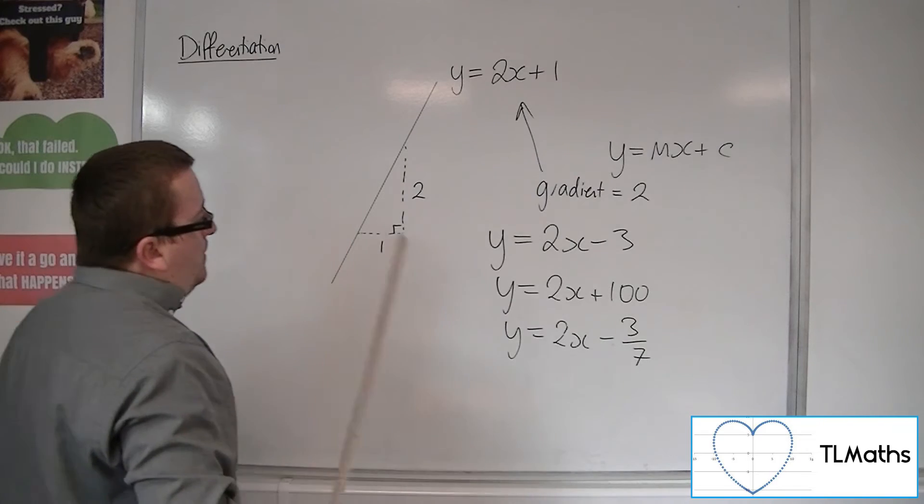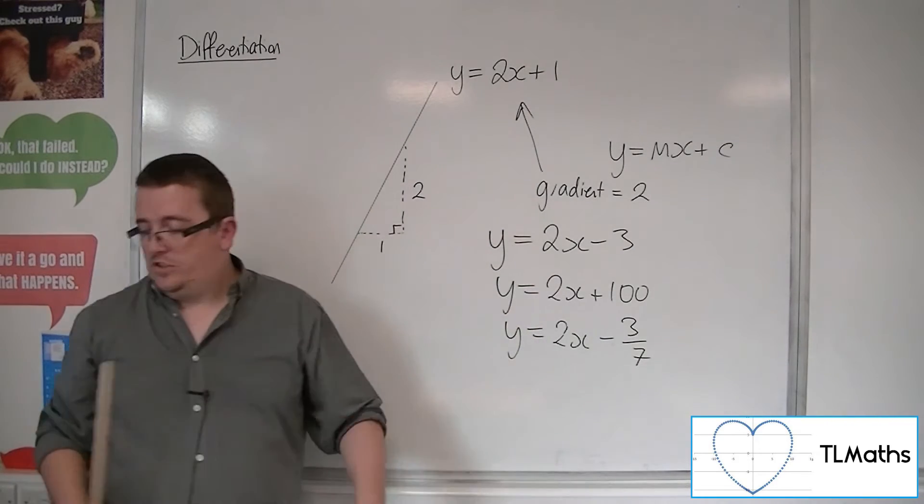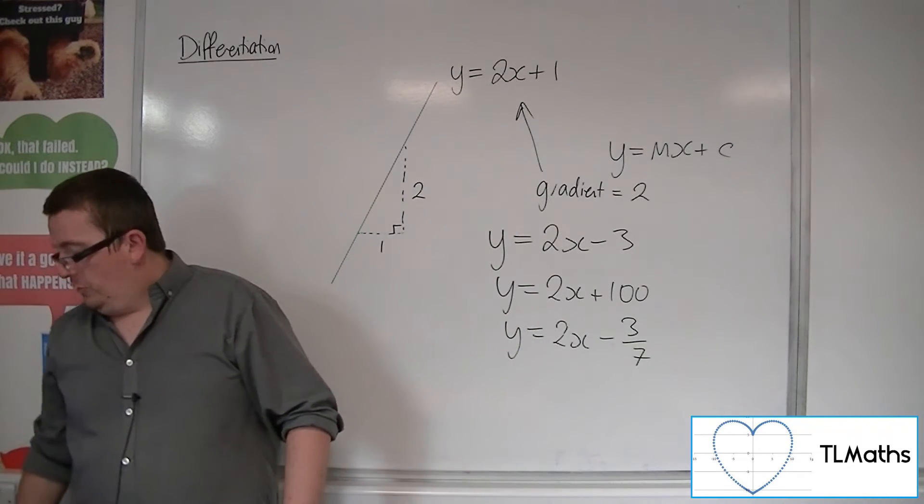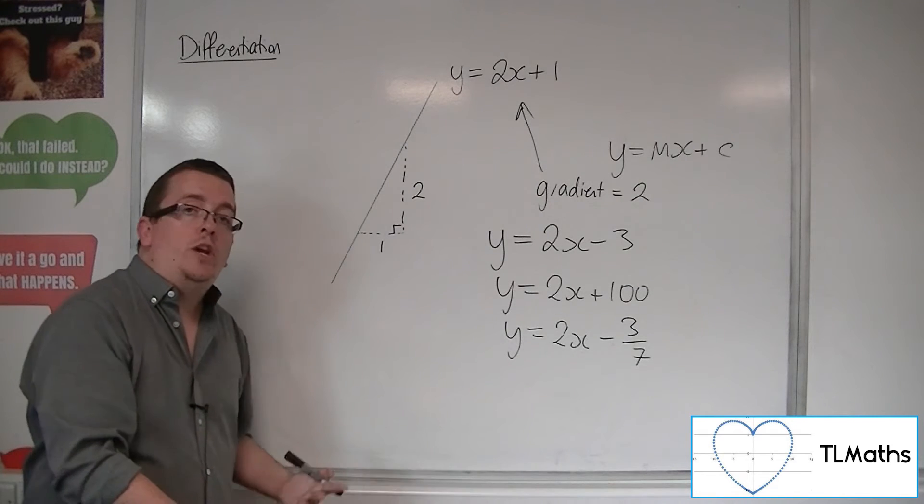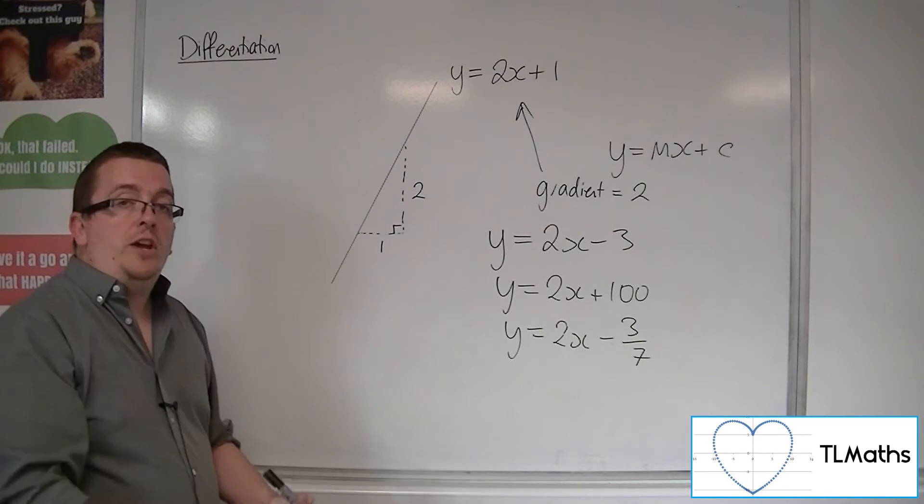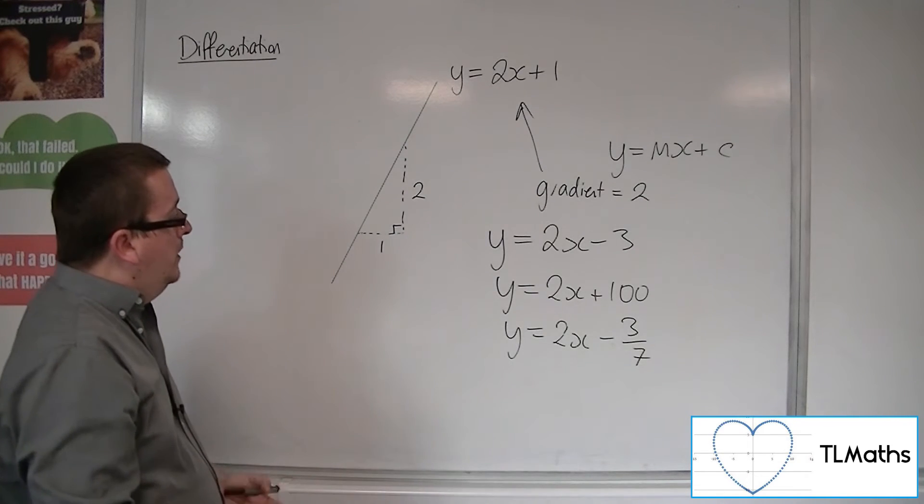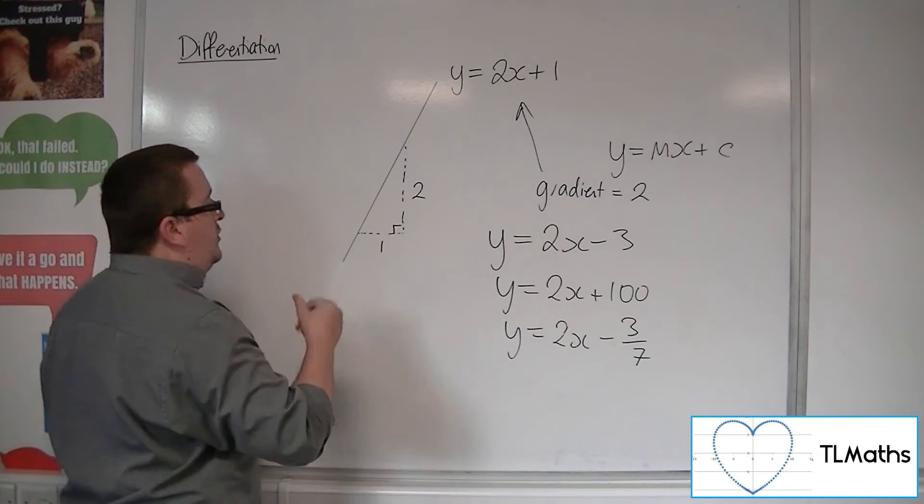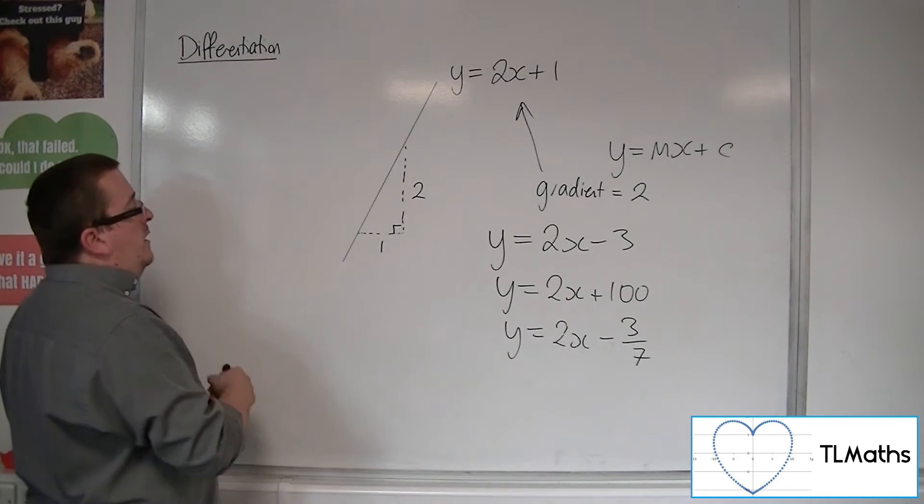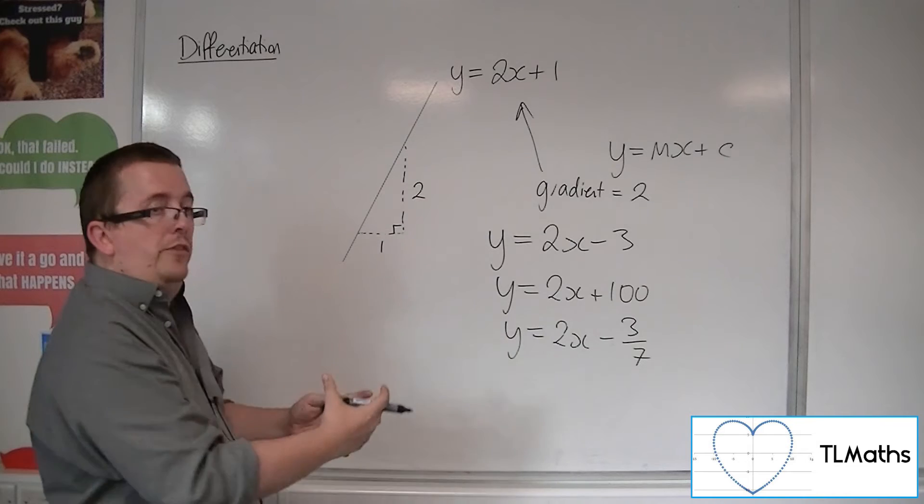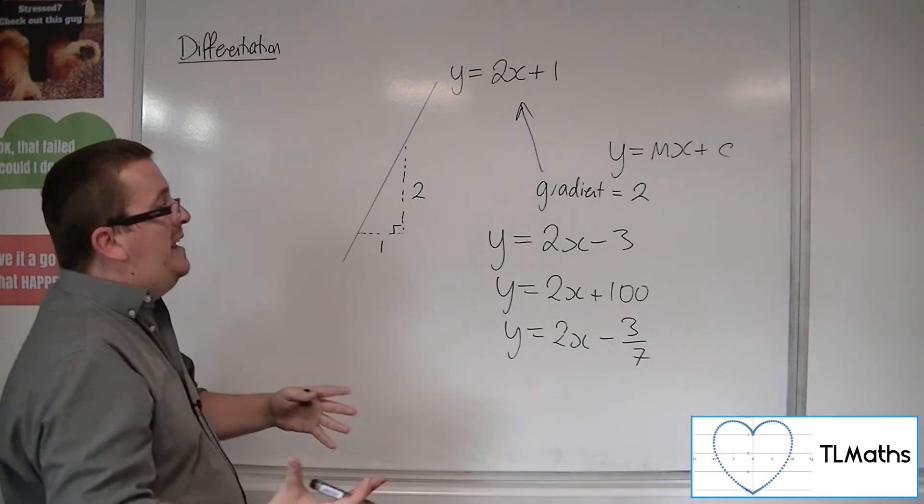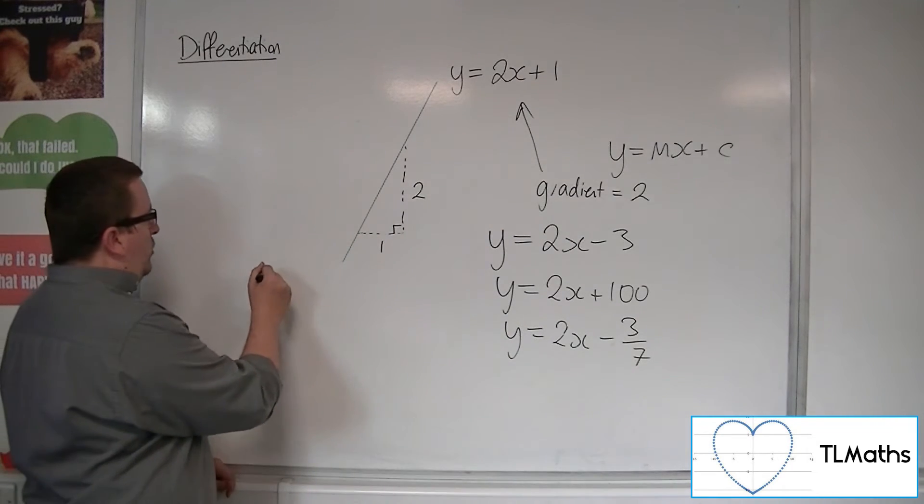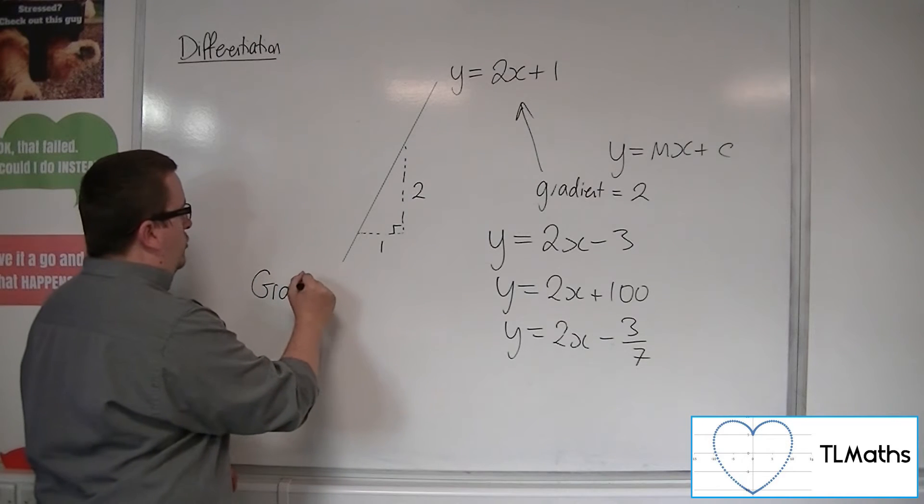So in all of these cases, I could say the gradient function, because it's unchanging, is just 2. So we could describe a function that tells us the gradient of the graph at any point.